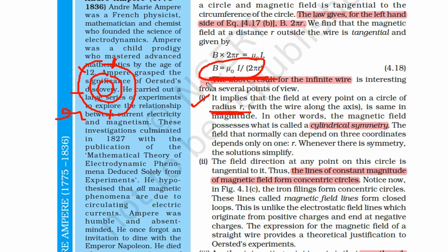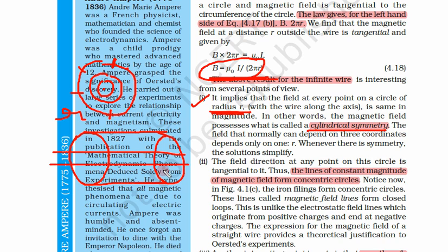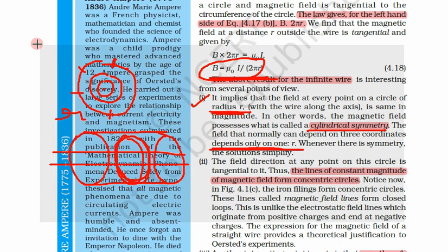The field was dependent on r, not on the x, y, z coordinate. So it implies that the field at every point on the circle of radius r along the axis is the same in magnitude. In other words, the magnetic field possesses what is called cylindrical symmetry. The magnetic field was like a circle, and we can have many circles creating a cylinder structure, so the magnetic field is cylindrically symmetrical. The field that normally can depend on three coordinates depends only on r because of this symmetry.